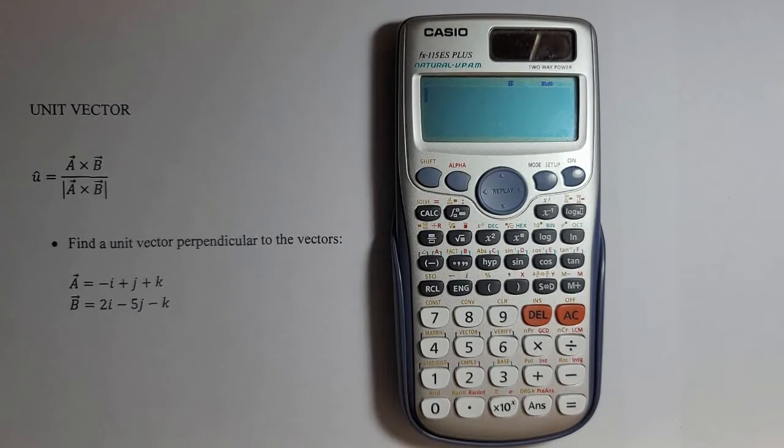First, if we want to find the unit vector, we need this equation. The unit vector is defined as the cross product of the two vectors divided by the magnitude of the cross product of the same two vectors.